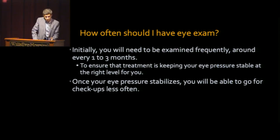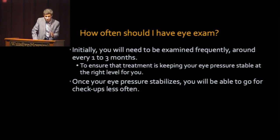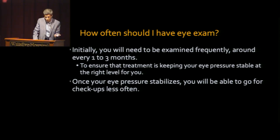When glaucoma is first detected, you need to be seen every one to three months. Later, when the pressure is stabilized and in a safe zone, you can be seen less often. It depends on the stage of the disease, the type of glaucoma, the level of eye pressure, and the rate of progression. Some patients may only need to be seen twice a year, while others may need four or five visits per year.